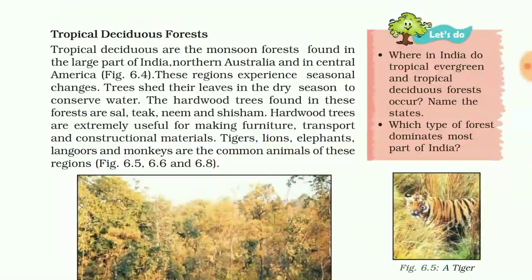Tropical deciduous forests are the monsoon forests found in a large part of India, northern Australia, and in Central America. These regions experience seasonal changes, and these forests look different during different seasons.